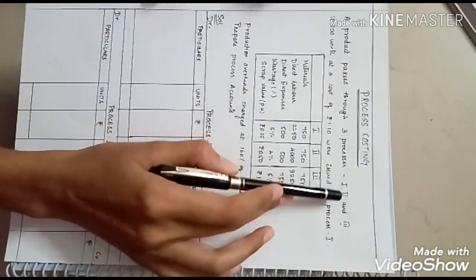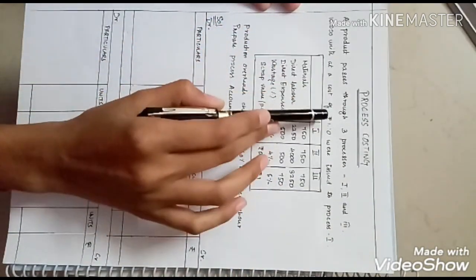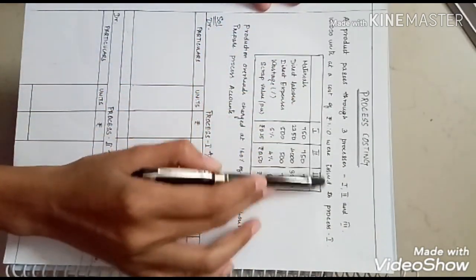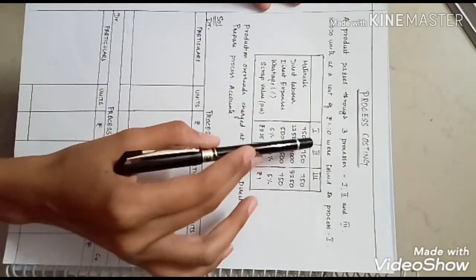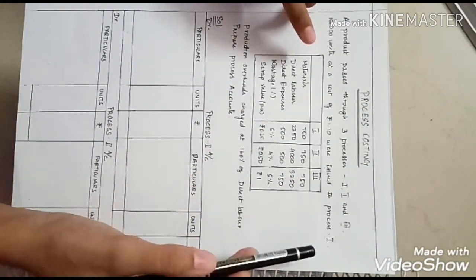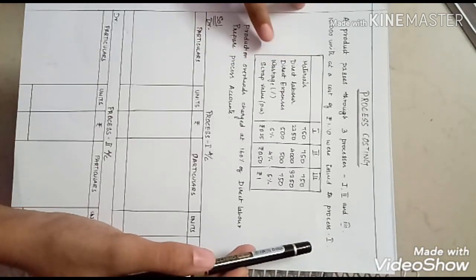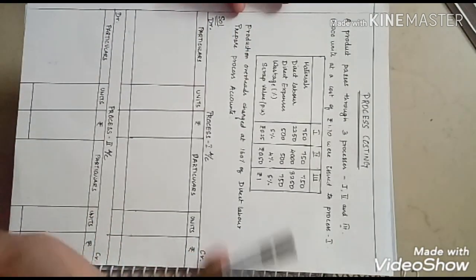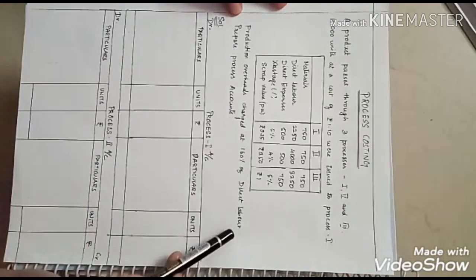Let's begin with a question. A product passes through three processes: one, two, and three. 10,000 units at a cost of rupees 1.10 paise were introduced to process one. These are the details regarding process one, two, and three — including materials, direct labor, expenses, wastages, and scrap value.